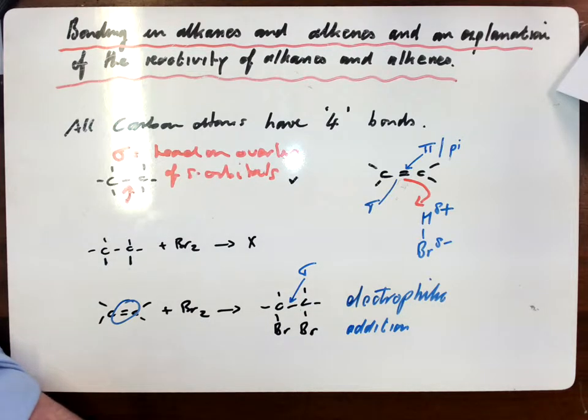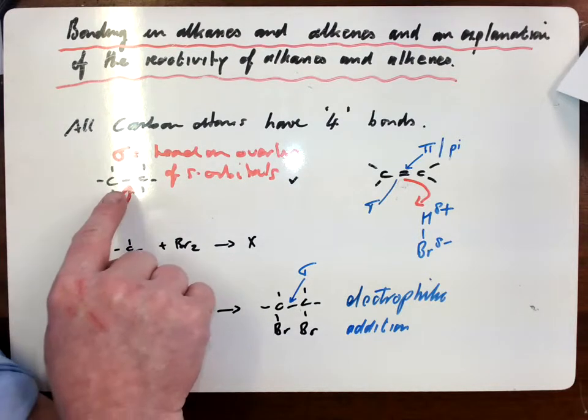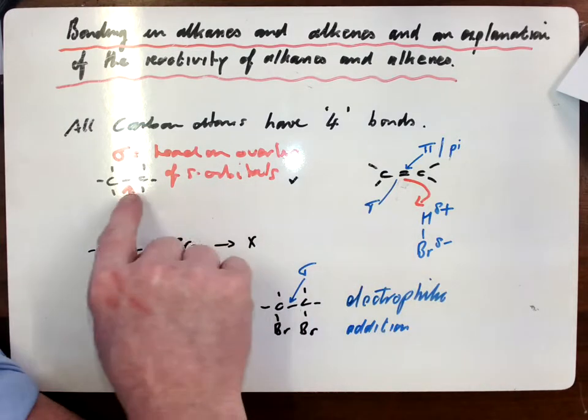So, in conclusion, guys, you would explain the bond formation here between the two carbons in the alkane as head-on overlap of S orbitals, giving you a sigma bond.